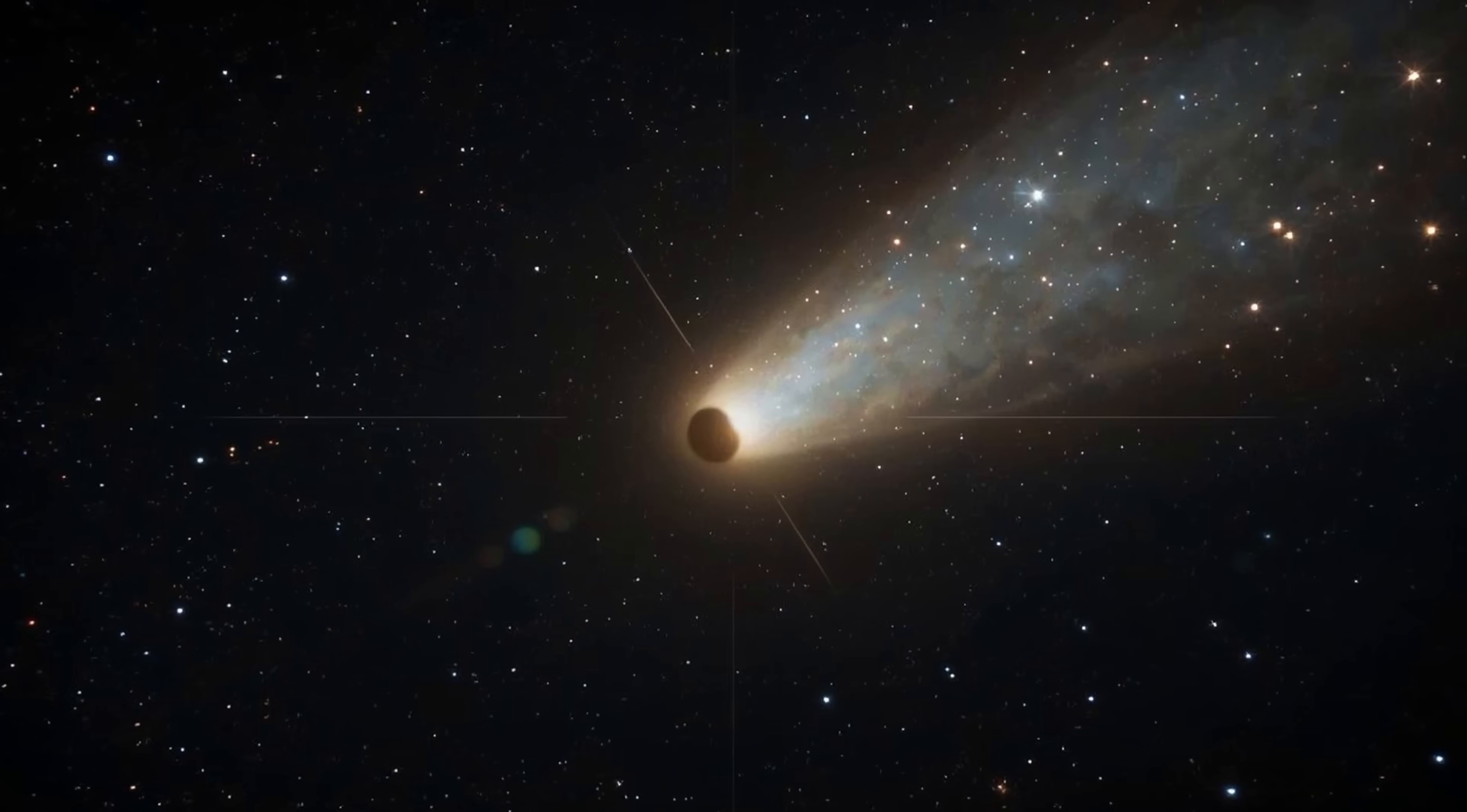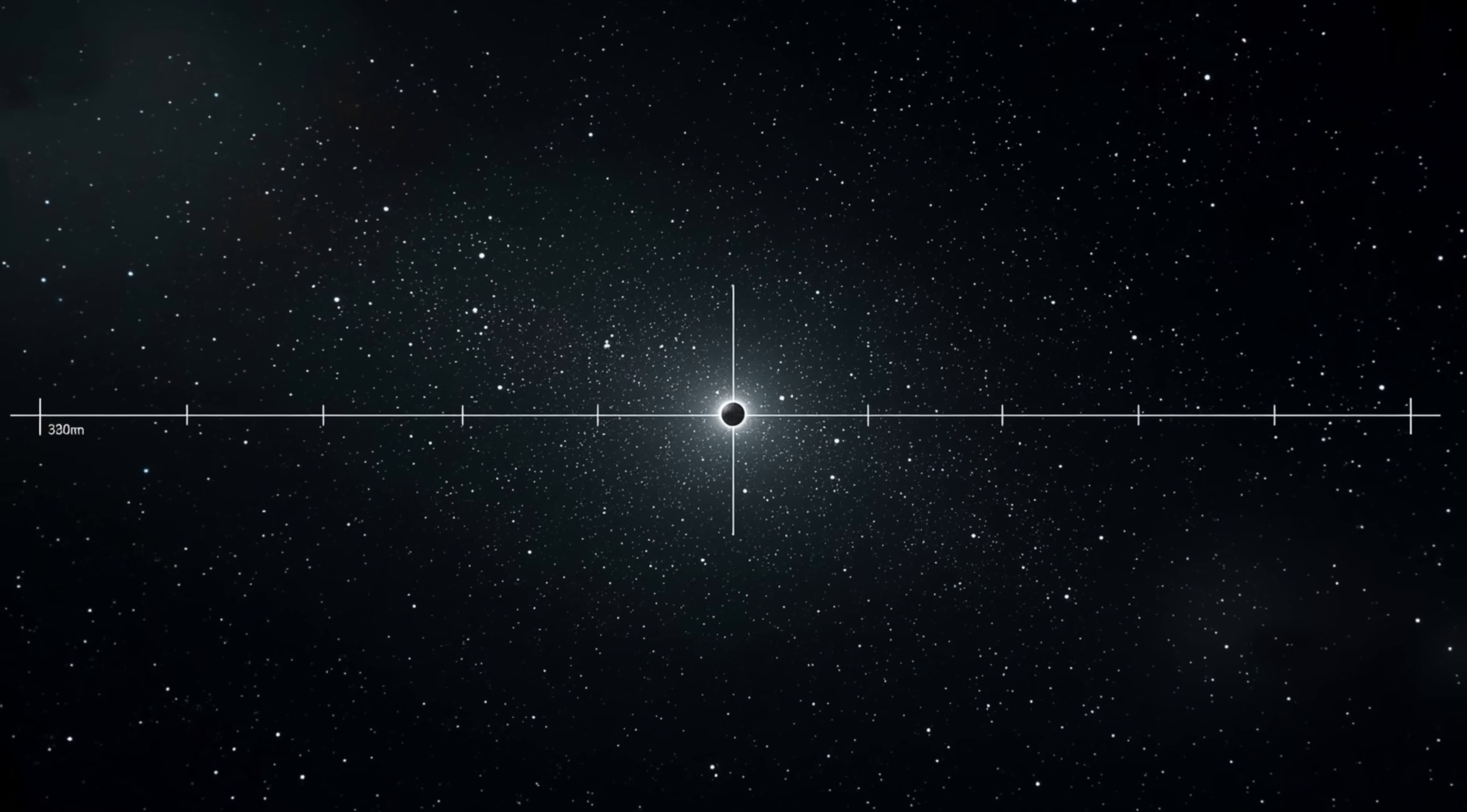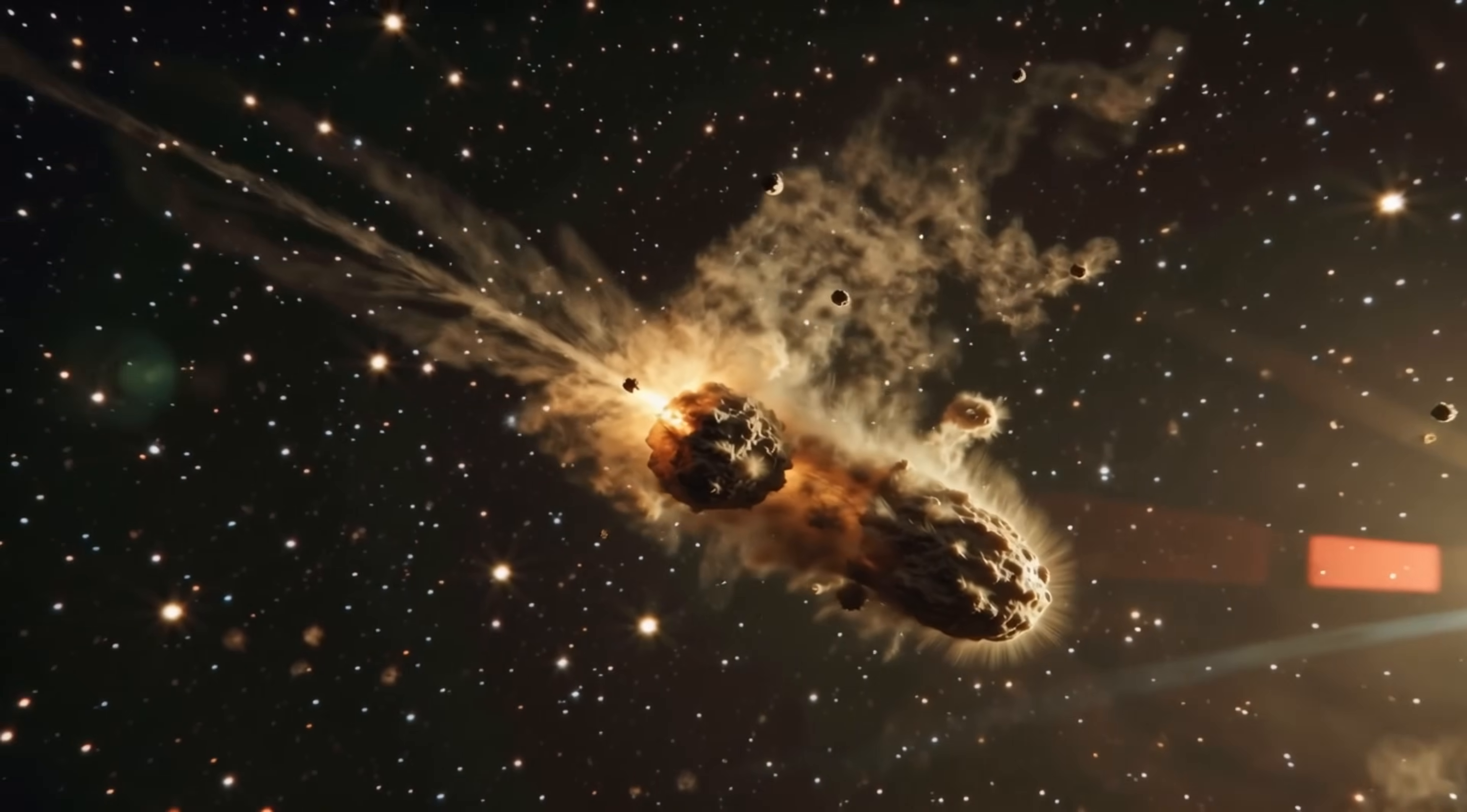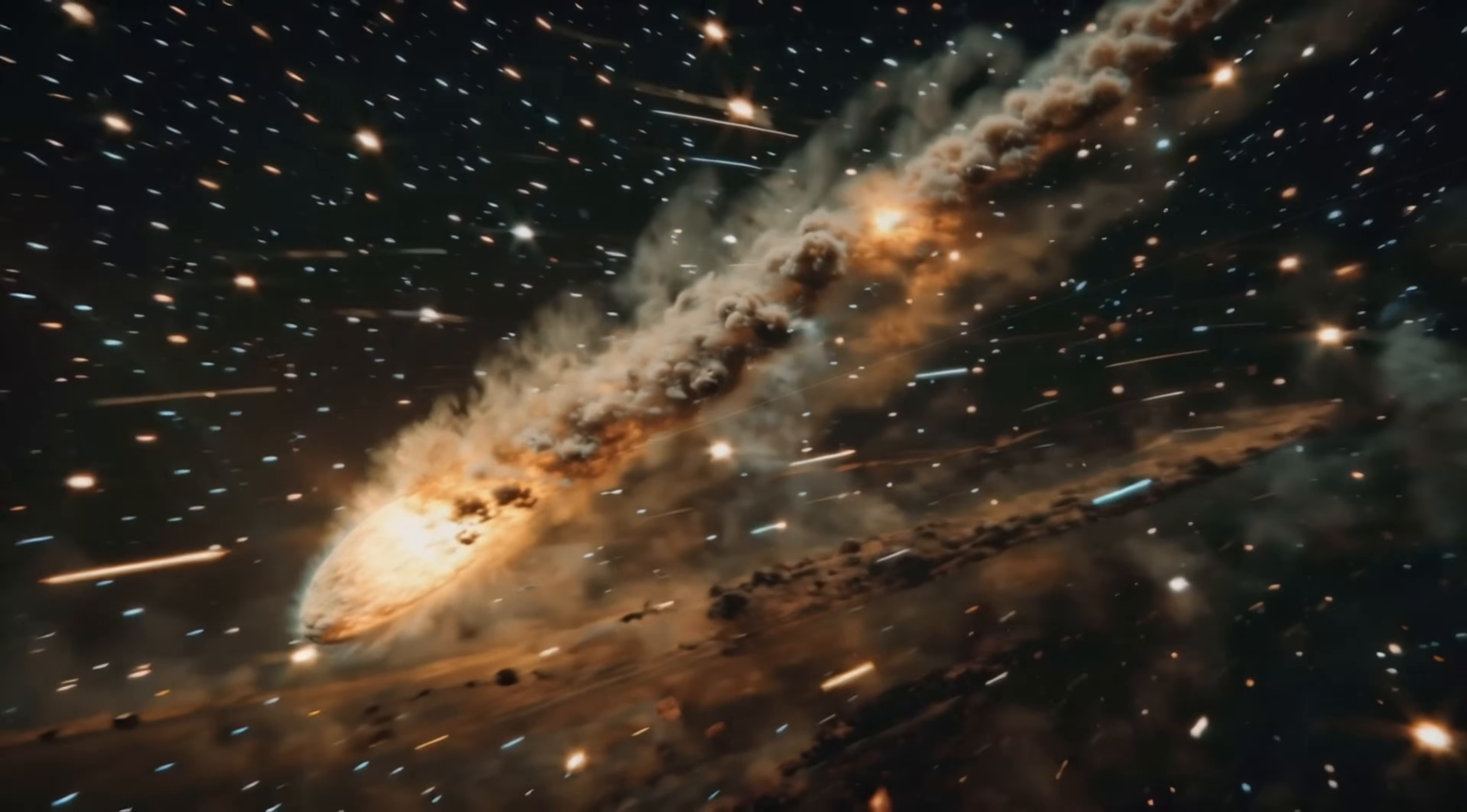The solid nucleus remains unresolved even in Hubble's sharp vision, placing an upper limit on its diameter at about 5.6 kilometers. The nucleus could be as small as roughly 320 meters across. Hubble detected a dust plume emerging from the sun-facing side and a faint dust tail streaming away from the nucleus. The comet is moving at about 130,000 miles per hour relative to the sun.